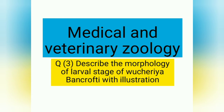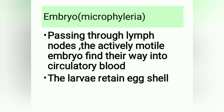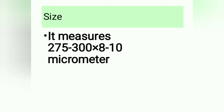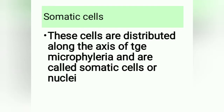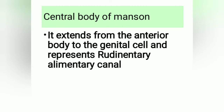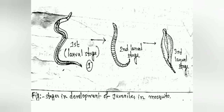Our third question is: describe the morphology of the larval stage of Wuchereria bancrofti with illustration. Embryo (microfilaria): the actively motile embryos find their way into the circulatory blood and retain the eggshell hyaline sheath. Size: 275–300 × 8–10 micrometers. Somatic cells are distributed along the axis of the microfilaria; genital cells are situated anterior to the anal pore. The central body of Manson extends from the anterior body to the genital cell, representing the rudimentary alimentary canal. Please take a screenshot of the stages in development of juveniles in the mosquito.